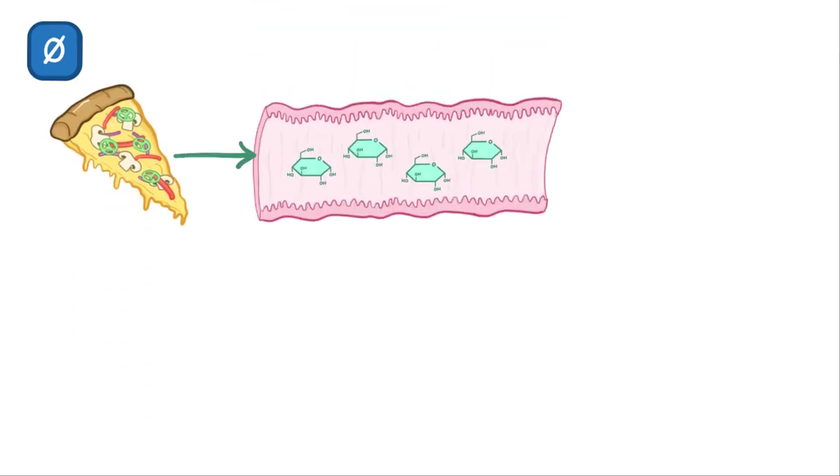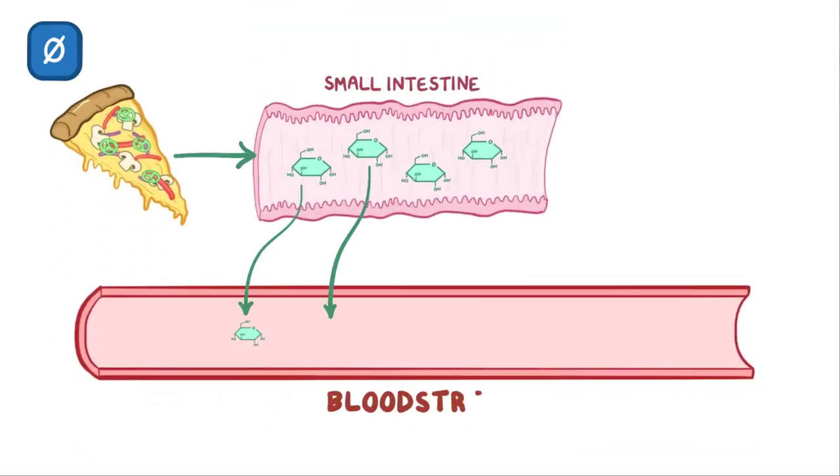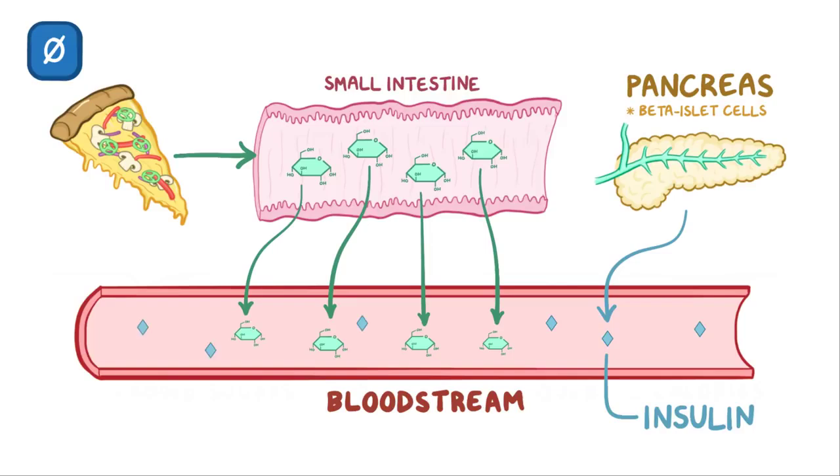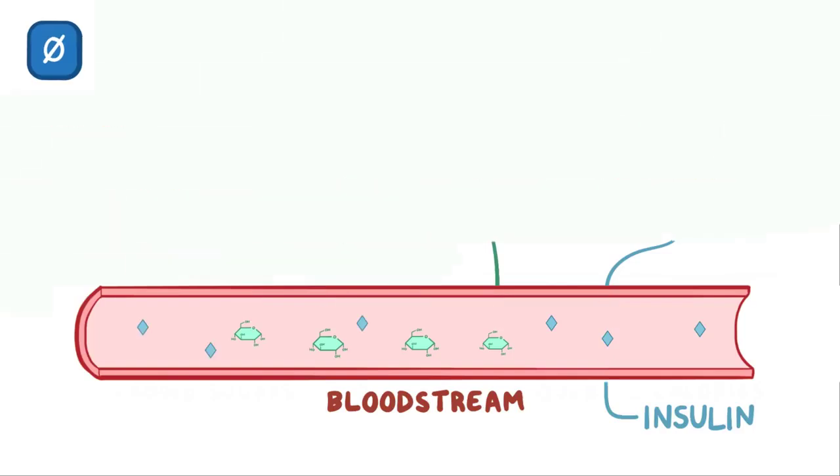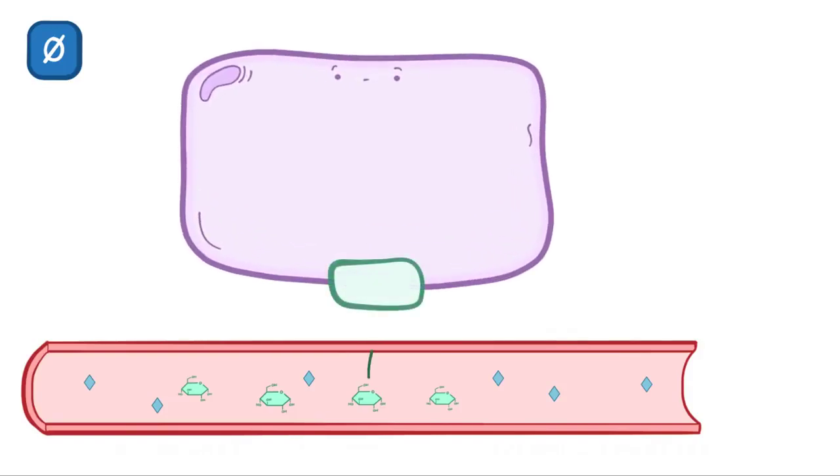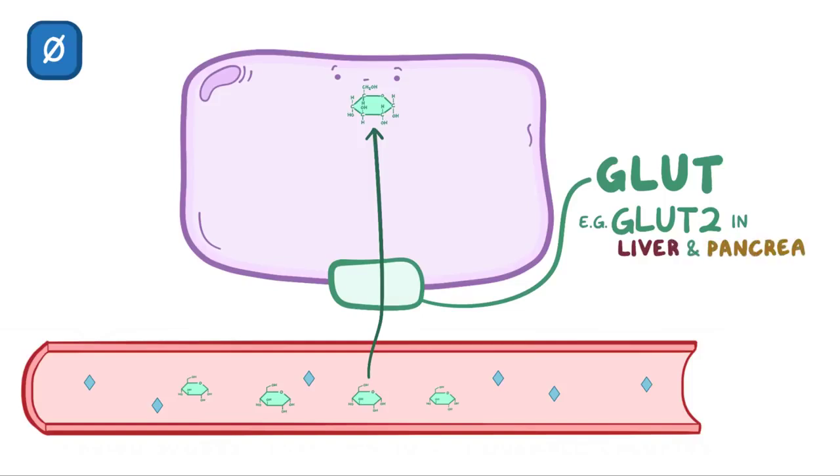Now going back to that delicious pizza, first glucose from those ingredients has to get from the small intestine into the bloodstream. In response to high blood glucose, the pancreatic beta cells secrete insulin. To get inside the cells, glucose utilizes glucose transporters, or GLUT, which are in the cell membrane. In fact, some glucose transporters like glucose transporter 2 in the liver and pancreatic beta cells are particularly responsive to glucose in the presence of insulin.